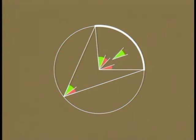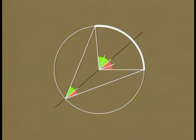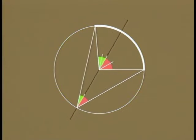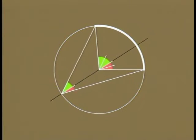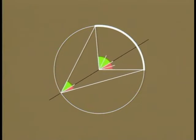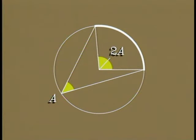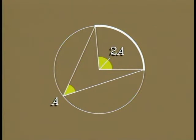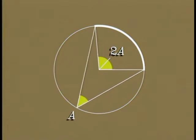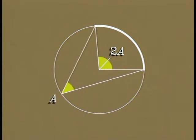This charming result has many interesting consequences. For example, keep the central angle fixed and move the vertex of the inscribed angle along the circle. As the angle moves, it always cuts off the same arc and doesn't change its size because it's always half the central angle.